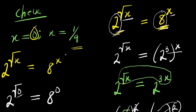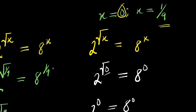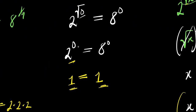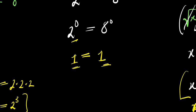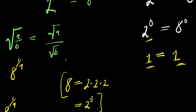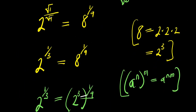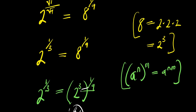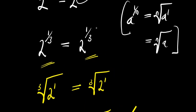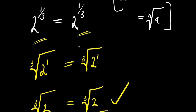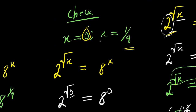Insert these values back into the original equation. Starting with x equals 0: you get 2 to the power of 0, which equals 8 to the power of 0, because square root of 0 is 0 — both sides give 1. Then insert x equals 1 over 9: square root of 1 is 1, square root of 9 is 3, so you get 2 to the power of 1 over 3. Express 8 as 2 to the power of 3, multiply exponents to get 2 to the power of 1 over 3 on both sides, giving cube root of 2 equals cube root of 2. So that is it — thank you and goodbye.